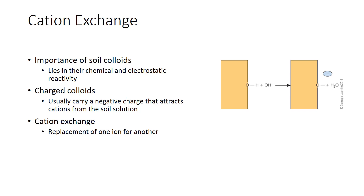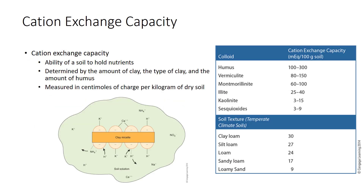The minus and plus charges balance for net zero charge. The negatively charged surface of soil colloids plays a key role in the way nutrients behave in soil. The colloid surface is negatively charged, so it adsorbs cations. Cations are exchangeable in that if one leaves, another takes its place. The ability of a soil to hold nutrients relates to the number of cations it can attract to soil colloids. This value — determined by the amount of clay, the type of clay, and the amount of humus — is measured by cation exchange capacity (CEC), measured in centimoles of charge per kilogram of dry soil. It may also be expressed as milligram equivalents per 100 grams of soil. The table lists CEC values for several clays, humus, and soil textures.